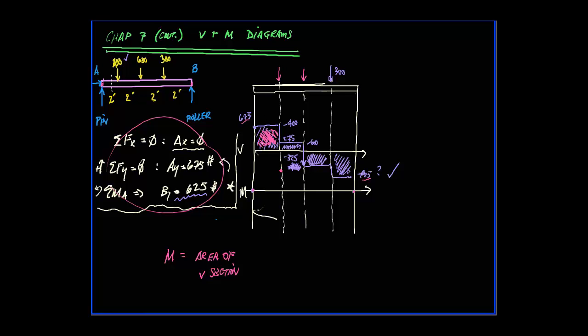So if that's 2 feet wide and that's 675 across there, 2 times 675 gives me 1350. And that tells me that my first part of the moment diagram will look like that.